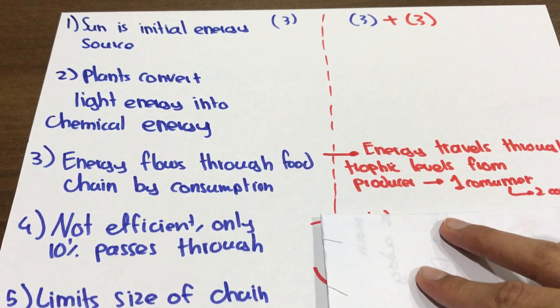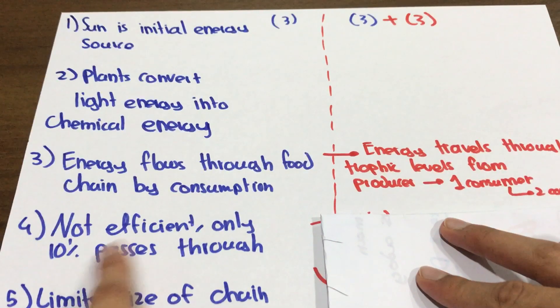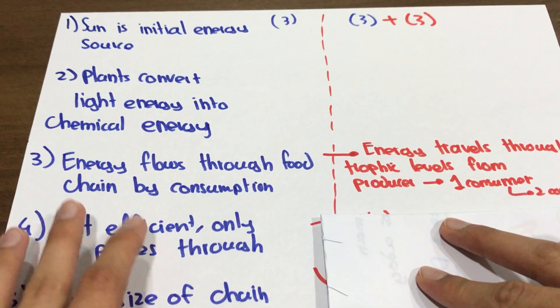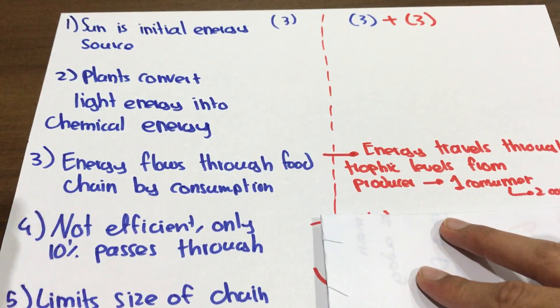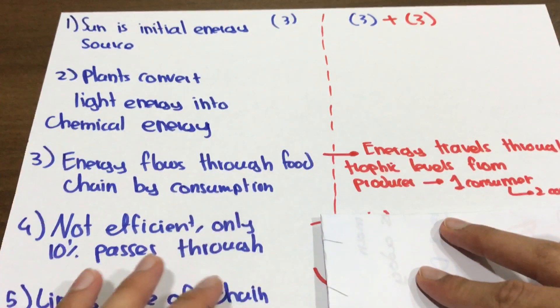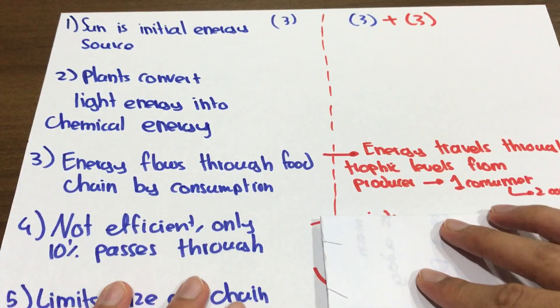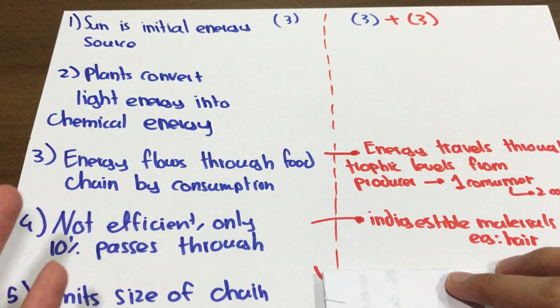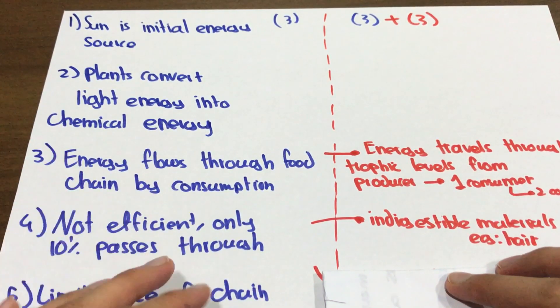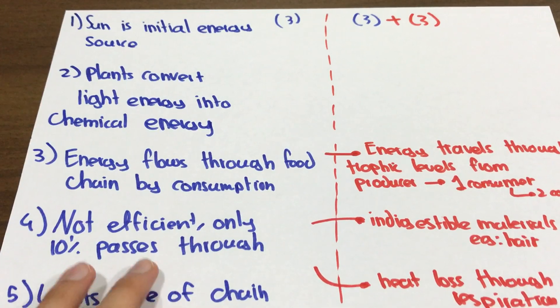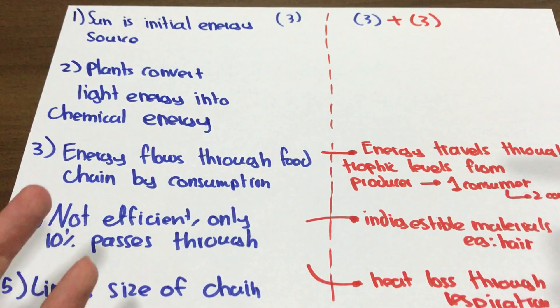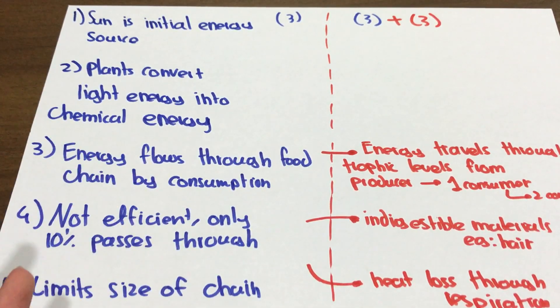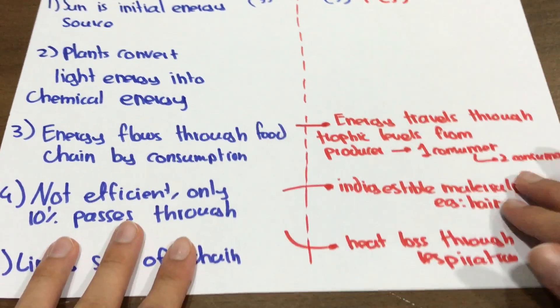Next one: energy is inefficient and only 10% passes through each level. I can build on that a little more with a few examples. For example, indigestible materials such as hair aren't consumed, so energy is lost. Also, every organism needs to undergo cellular respiration to release energy, and that produces heat, which means that heat energy is lost.